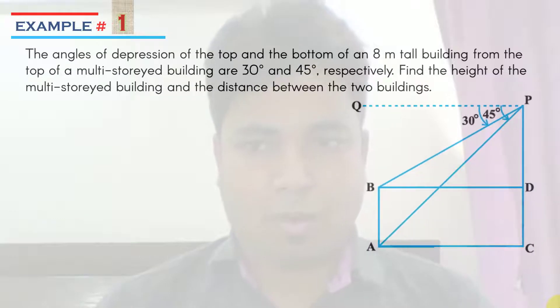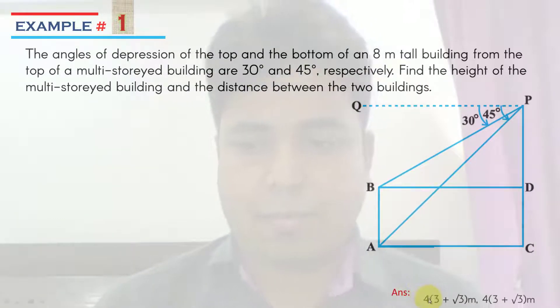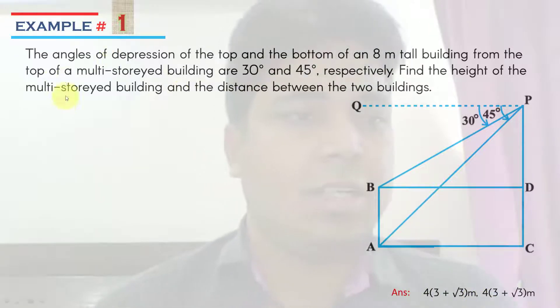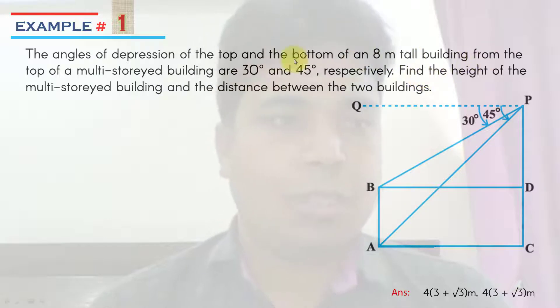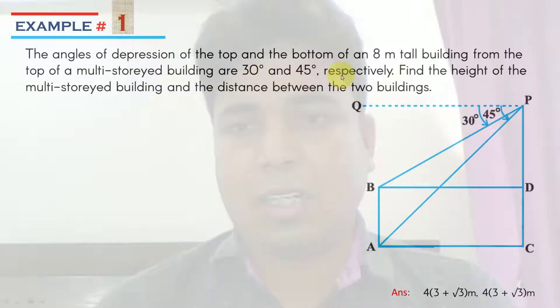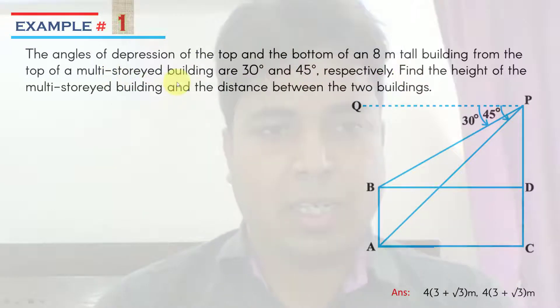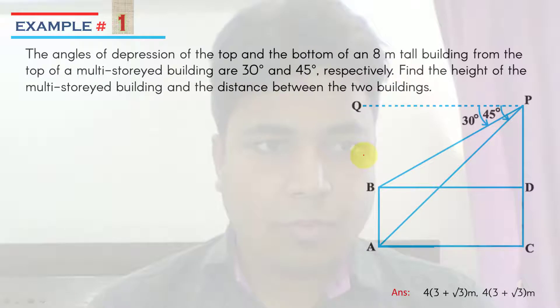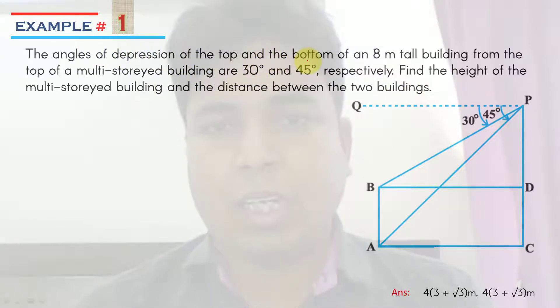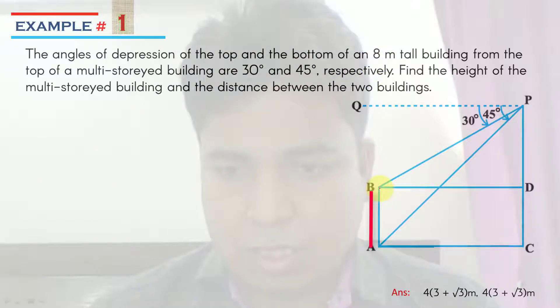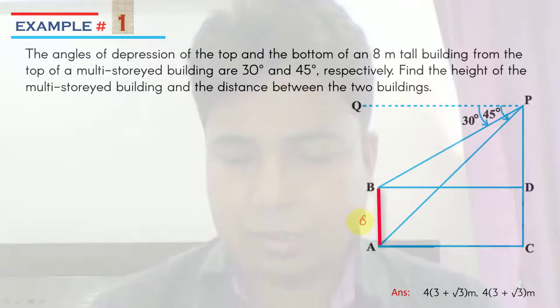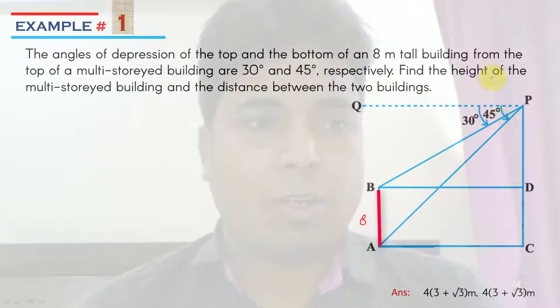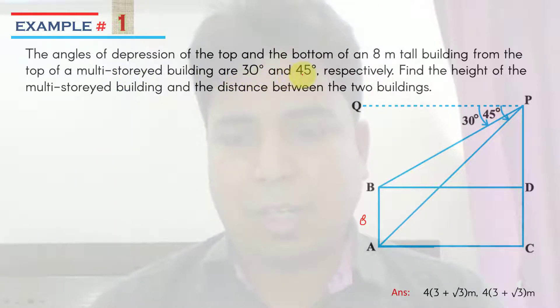Here is example number one. The angle of depression of the top and the bottom of an 8 meter tall building from the top of a multi-storied building are 30 degrees and 45 degrees respectively. Find the height of the multi-storied building and the distance between the two buildings. AB length is 8 meter, and the depression angles from the top of the multi-storied building are 30 and 45 degrees respectively.